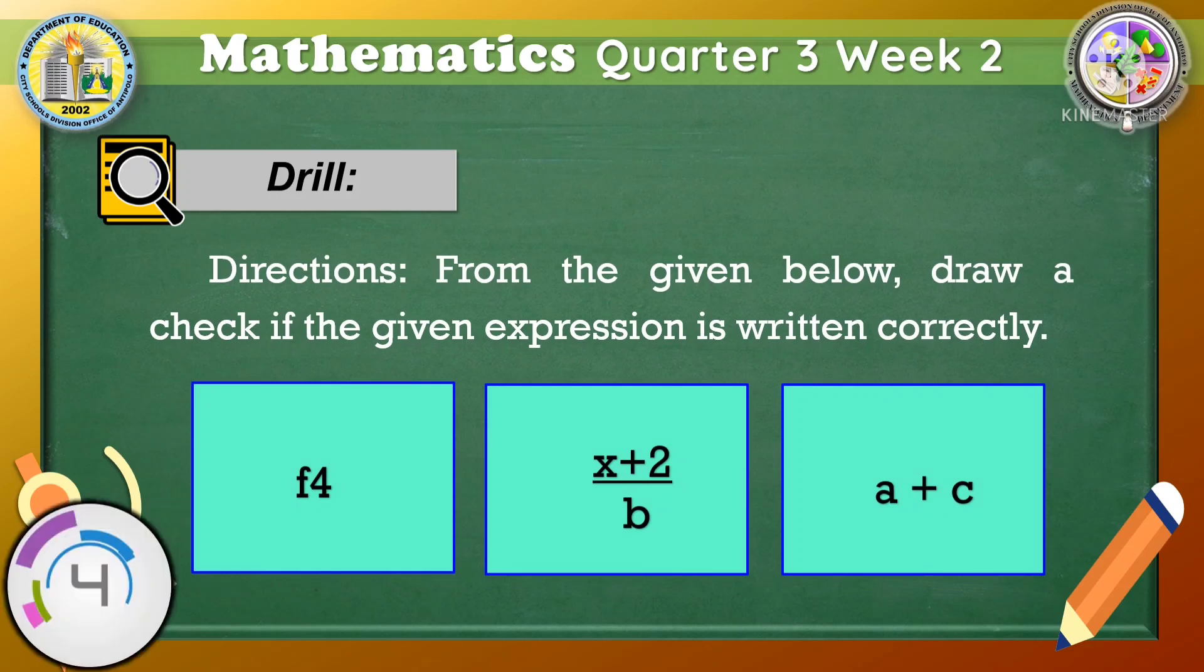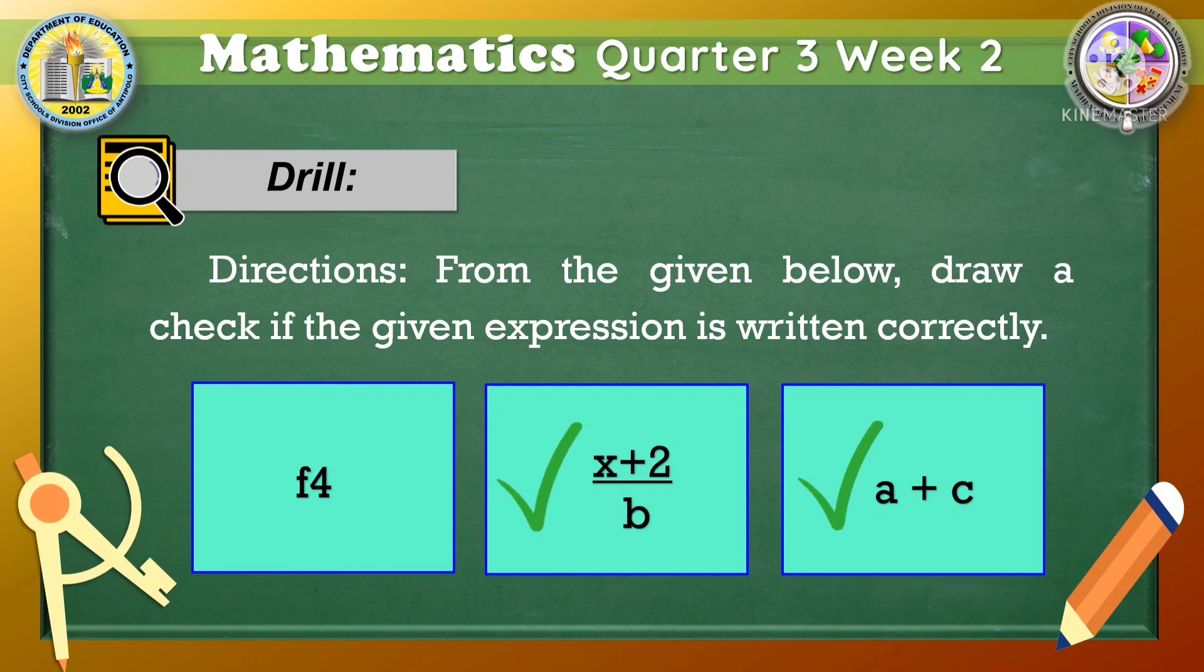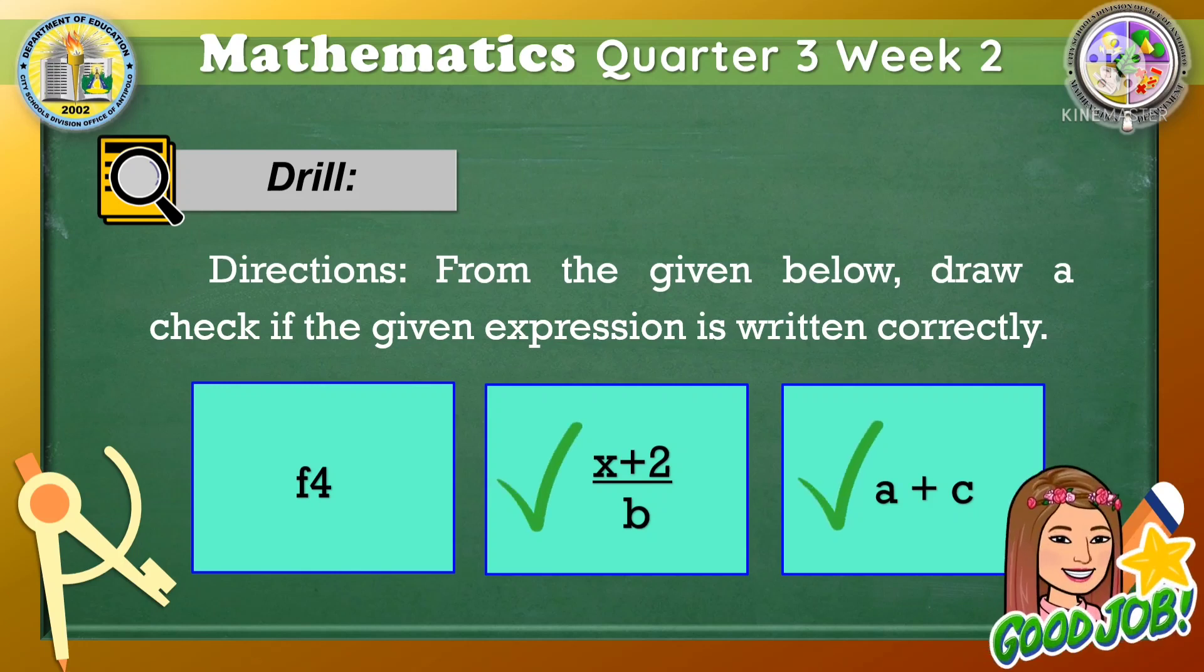Your timer starts now. Time is up. Let's check your answers. The correct answers are x plus 2 over b and a plus c. F4 is incorrect since the variable f comes before the constant 4. Did you get it right? Good job!